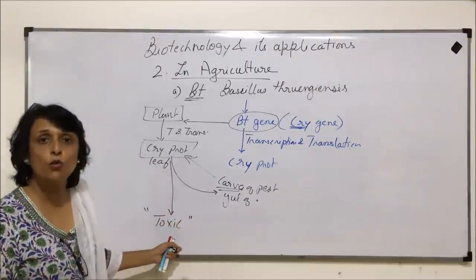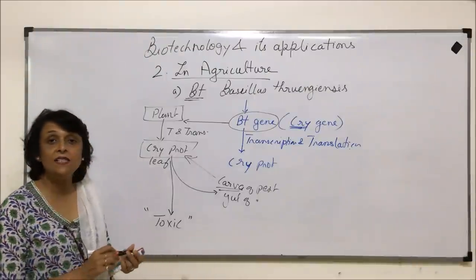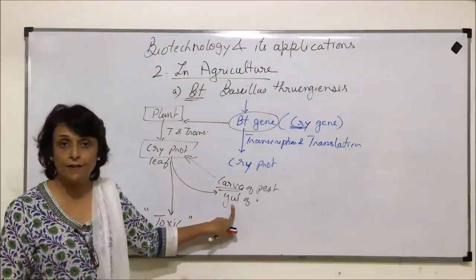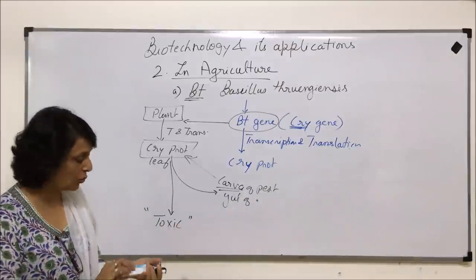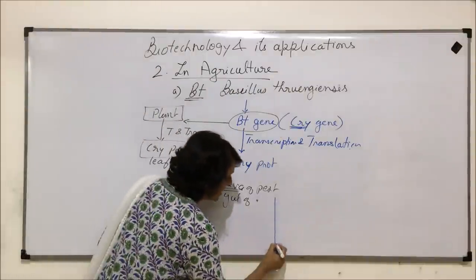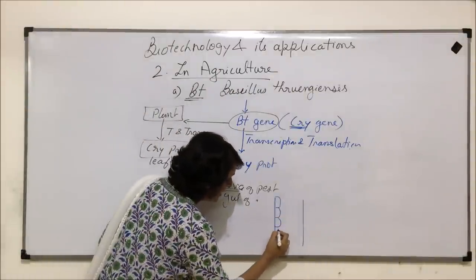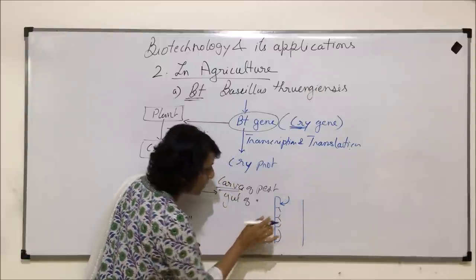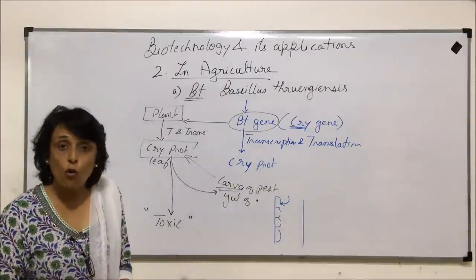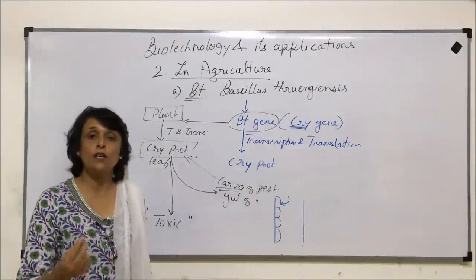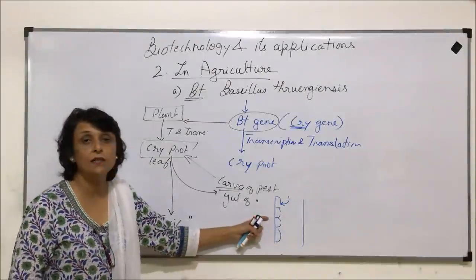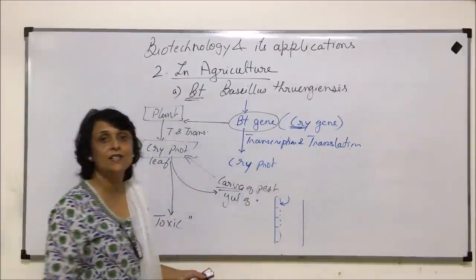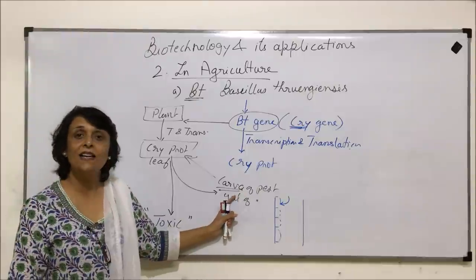How does this toxic protein work? It binds to the epithelial cells of the gut and creates perforations in those cells. This protein will create holes or perforations in the cells of the alimentary canal. Through these holes or punctures, water enters into the cell. The cell swells and ultimately ruptures. If all these cells get destroyed, the larva gets killed.